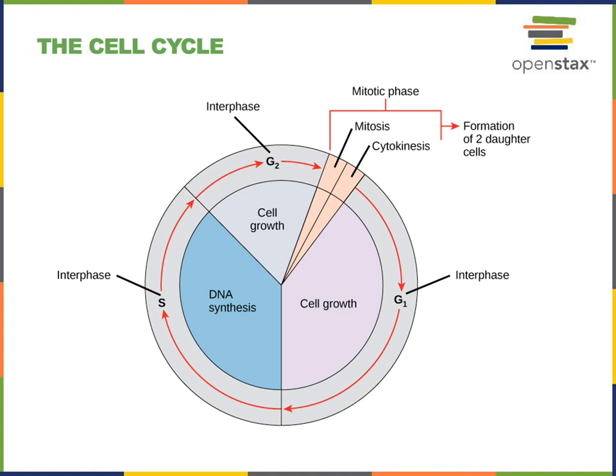The G2 phase provides a final checkpoint to make sure everything is ready for mitosis. Together, G1, S, and G2 are known as interphase of the cell cycle.